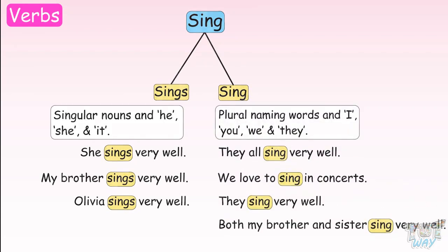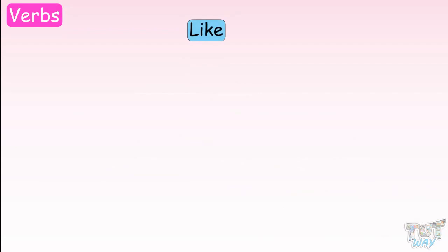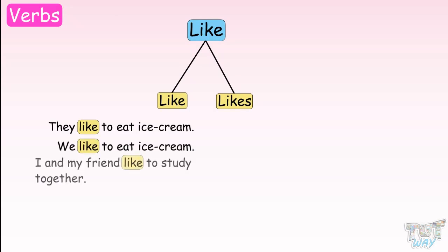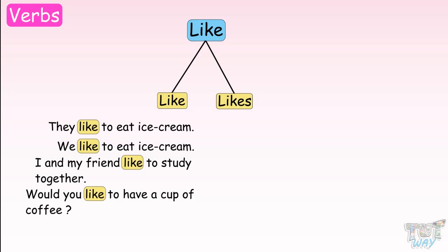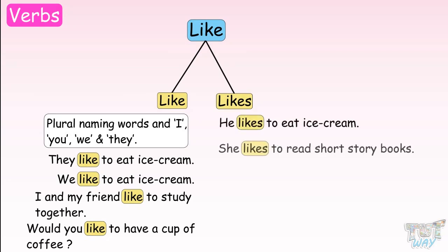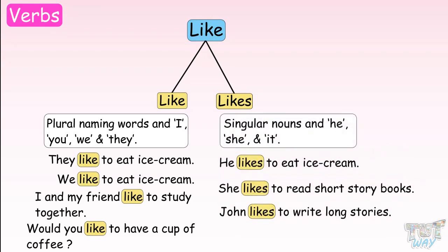Here we have another verb, like. We have two forms: like and likes. They like to eat ice cream. We like to eat ice cream. I and my friend like to study together. Would you like to have a cup of coffee? We use like when we talk about plural naming words or when our sentences have I, you, we, and they. He likes to eat ice cream. She likes to read short story books. John likes to write long stories. We use likes with singular naming words and with he, she, and it.